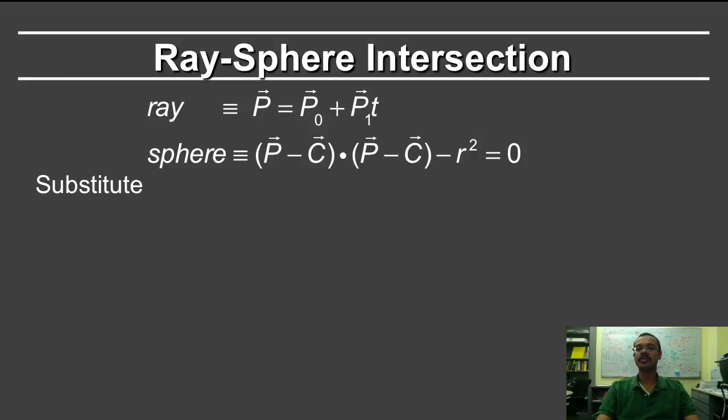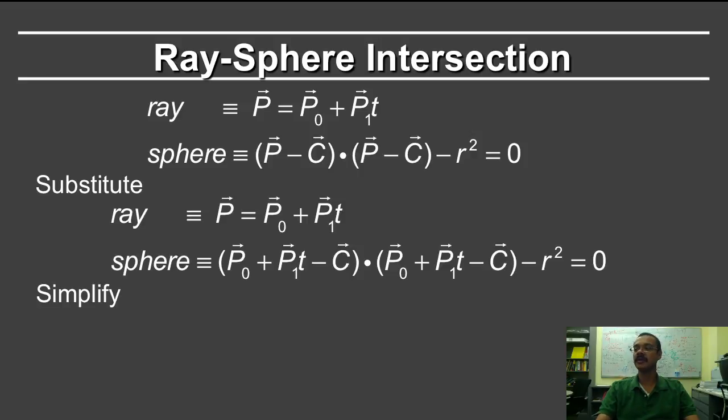So the first step we do, as in all of these ray-surface intersections, is substitute the ray equation for the sphere. So substitute P₀ plus P₁t into P for the sphere. So making that substitution, we get the formula shown here. The only unknown is the distance along the ray t. Everything else is known from the properties of the ray and the sphere.